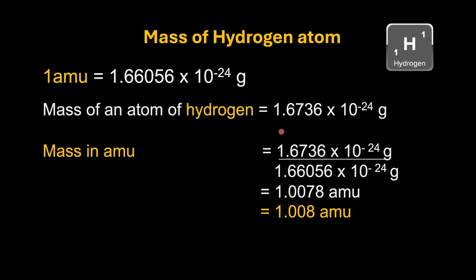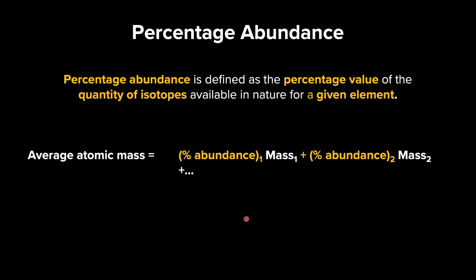There is another concept we need to dive into: percentage abundance. Percentage abundance is defined as the percentage value of the quantity of isotopes available in nature for a given element. For any element, each isotope has a certain percentage abundance and a specific mass. We need to multiply the mass of each isotope by its percentage abundance and sum over all isotopes.